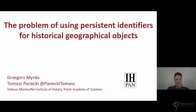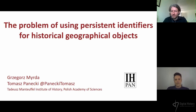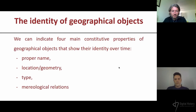Not everybody thinks that places are stable, and we would like to say some words about it. The agenda of our presentation is that I will start and then Grzegorz will take over. In our talk we would like to say some words about identifying historical geographical objects over time and space, and the issue of persistent identifiers and numerical identification of features of objects. We've been working as a team at the Institute of History of Polish Academy of Sciences on this issue.